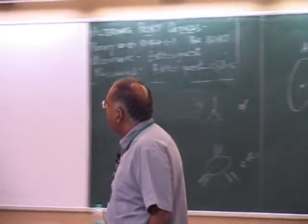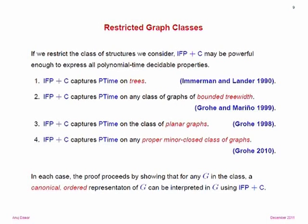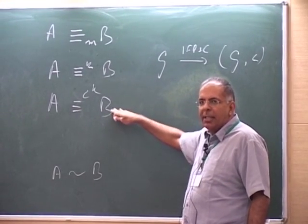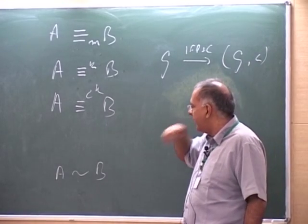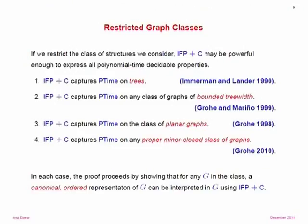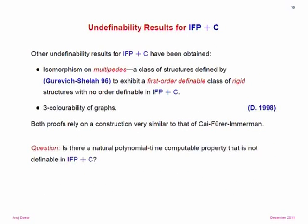So we've hit something fairly natural in the development, but there's still a gap to isomorphism. Following the Cai-Fürer-Immermann construction, similar constructions were used to give other examples not definable in fixed-point with counting—such as Cai-Fürer-Immermann-style multi-pedes constructed by Graevich and Chela to exhibit a first-order definable class of rigid structures on which no order is definable in fixed-point with counting. Three-colorability is another natural example not definable in fixed-point with counting or even infinitary counting logic—though that's not a polynomial-time property as far as we know.